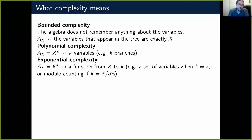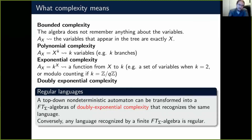For doubly exponential complexity, a top-down non-deterministic automaton can be transformed into an algebra of doubly exponential complexity recognizing the same language. Conversely, any language recognized by a finite algebra is regular. So our hierarchy of complexity classes stops at doubly exponential, and doubly exponential exactly corresponds to the regular languages.